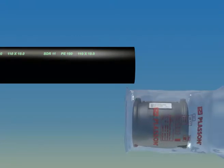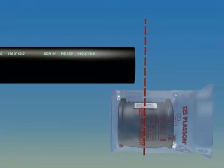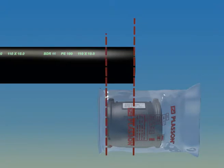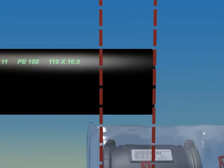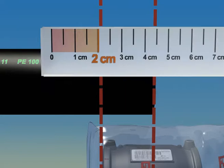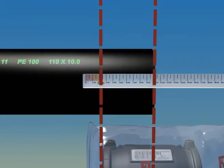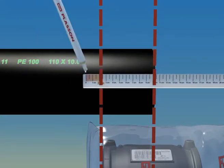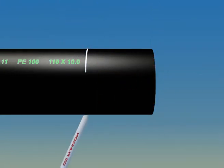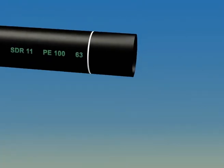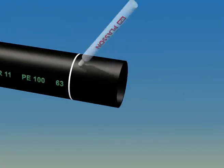The pipe must be measured and marked to prepare for scraping. Measure half the length of the fitting, add two centimeters and mark the pipe as shown here.